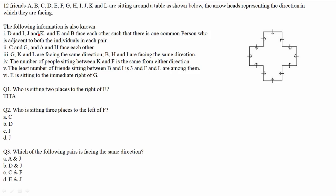The first point states: D and I, J and K, E and B face each other such that there is only one common person adjacent to both individuals in each pair. This means D and I must be at directly opposite positions. If D is at one point, I will be at the directly facing point — these are the only valid positions for each pair.